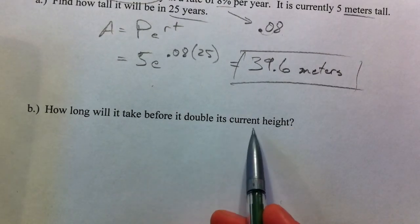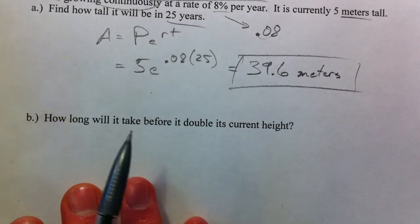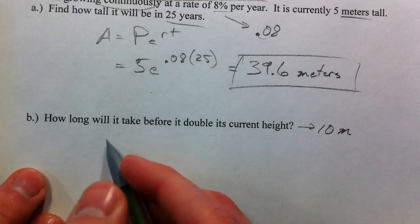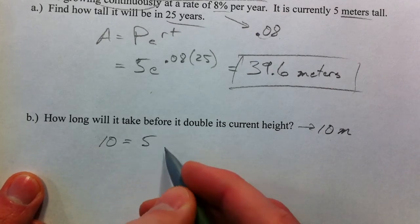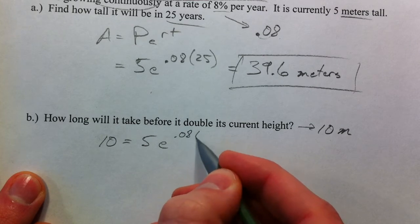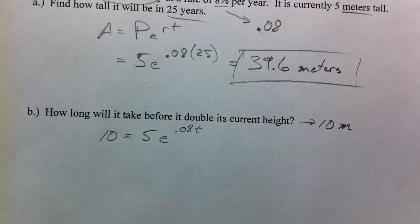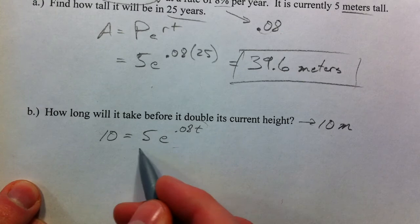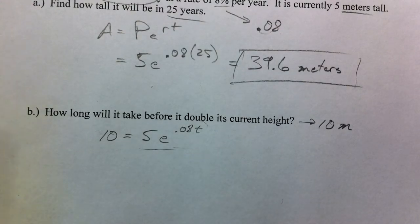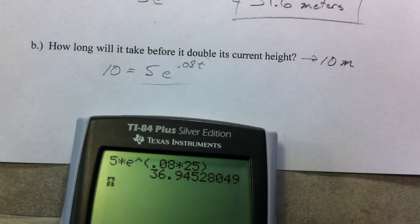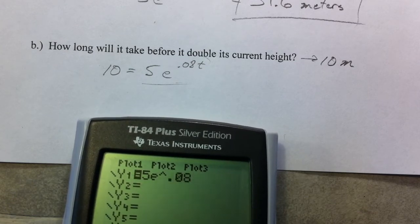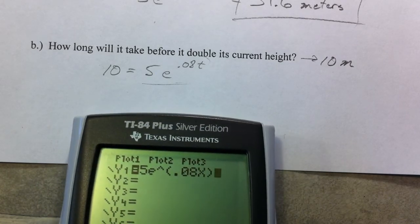How long will it take before it doubles its current height? Its current height is 5, so how long will it take before it gets to 10 meters? We want to solve the equation: 10 equals 5 times E to the 0.08 times T. We want to know when Y equals 10 on this equation. So I'm going to type our equation into Y equals: 5 times E raised to 0.08 — I need parentheses there — times X, instead of T, because the calculator doesn't allow T.